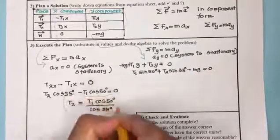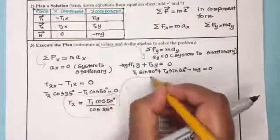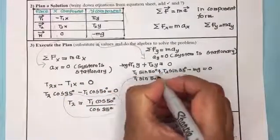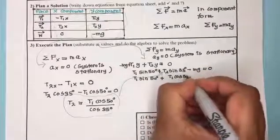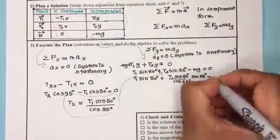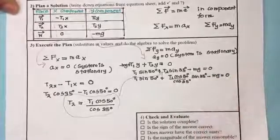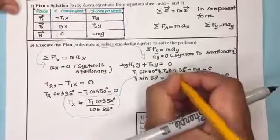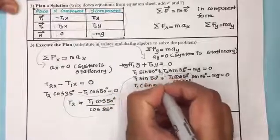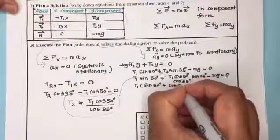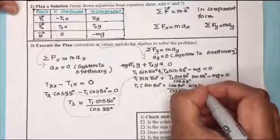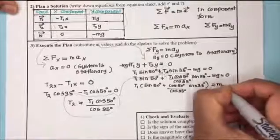Now I substitute T2 in terms of T1 into the y-equation: T1·sin50 plus (T1·cos50 / cos35)·sin35 minus mg equals zero. This gives one equation with one unknown — T1. I factor out T1, which is common to both terms.